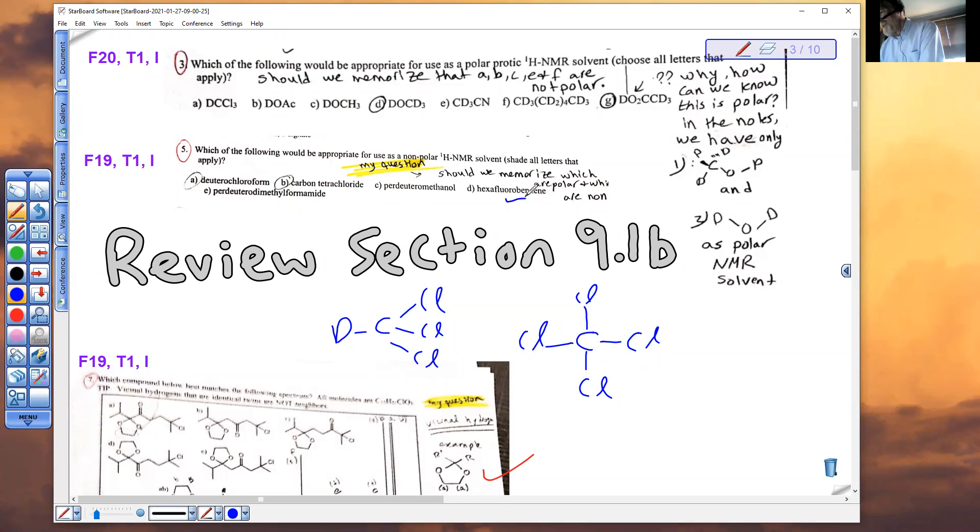Per deuterodimethylformamide would be D-carbonyl. And once again, you got to go to section 9.1b, CD3, CD3. Dimethyl is now diduteromethyl. And that's polar aprotic. Don't pick it. So just remember those three categories. When you review 9.1d, I'm going to pick one of the categories for your test and ask you which solvents fit in that category. And that's it. I promise it's going to happen.